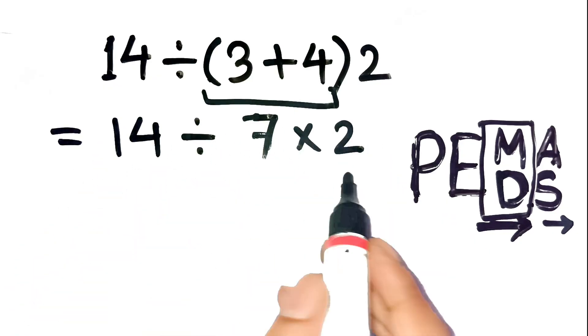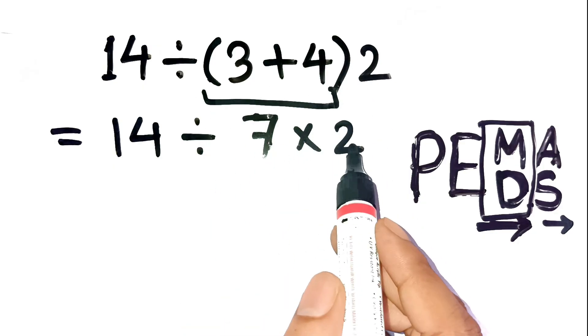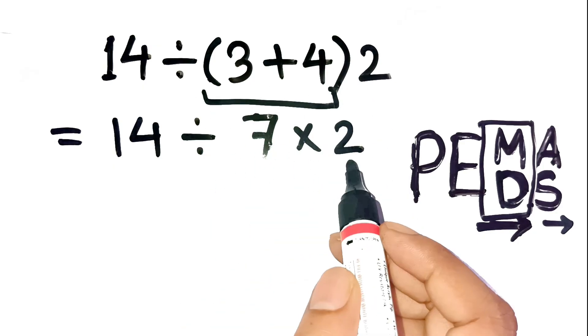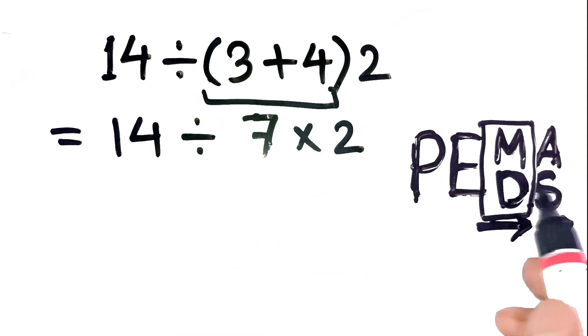Now this is where almost everyone slips up. They see the parentheses are gone, so they immediately multiply 7 times 2 first. But according to PEMDAS, multiplication and division share equal priority, meaning we go left to right.